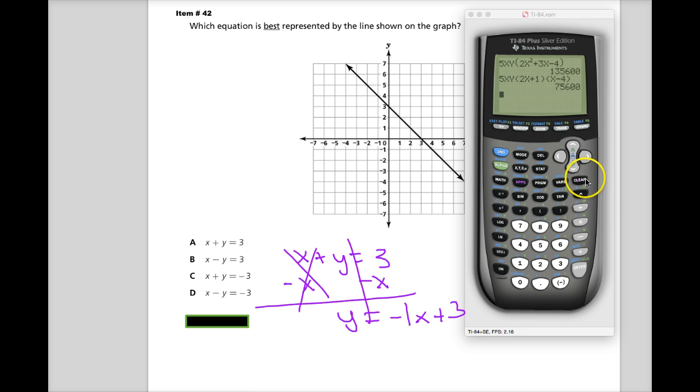And then you could just go over and graph it. Y equals negative X plus 3. You graph it. There's the graph. It looks almost exactly like it.